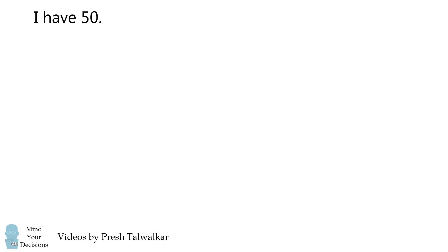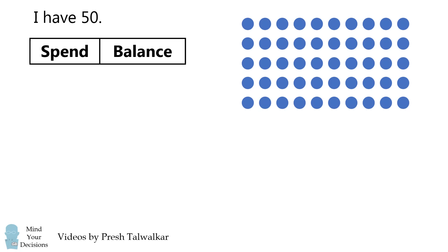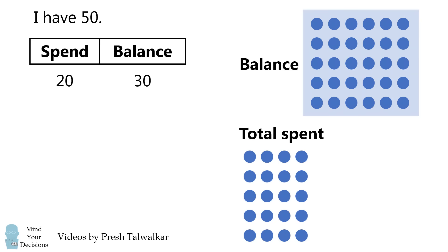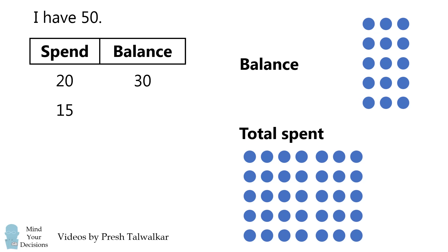So to better understand this problem, let's illustrate what's going on. We start out with 50 units of currency. Let's compare the amount that we spend versus the balance remaining. If we start out spending 20, we'll remove 20 of these dots to the spending column, and then we have a balance of 30. What happens if we spend 15? We then remove 15, and we have a balance of 15.